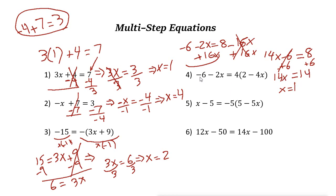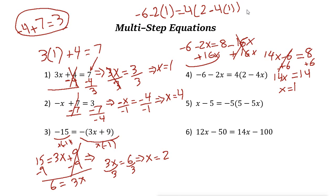Let's check the answer. It's negative 6 minus 2, and the answer we found is x equals 1. So negative 6 minus 2 times 1 equals 4 times (2 minus 4 times 1). Checking: negative 6 minus 2 is negative 8. Inside the parentheses, 2 minus 4 is negative 2. And 4 times negative 2 is negative 8. So negative 8 equals negative 8 — the answer is correct.